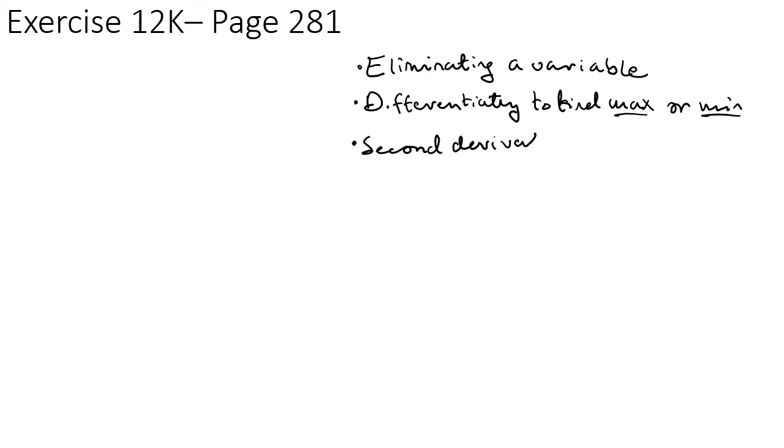You should now be able to do exercise 12K on pages 281. So just to quickly recap, it's all about eliminating a variable. And if you want to prove that you've got a maximum or a minimum, then the second derivative will help you do that. And if the second derivative is greater than zero, once you put that value of x in, you have found a minimum. And if it's less than zero, you have found a maximum.